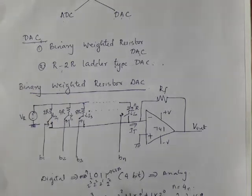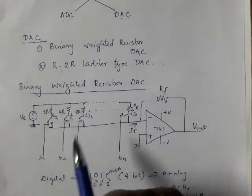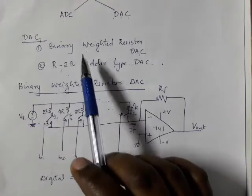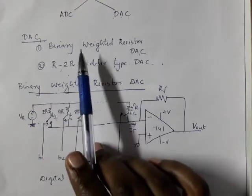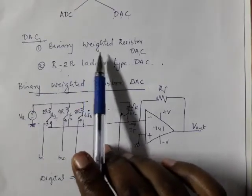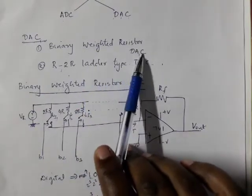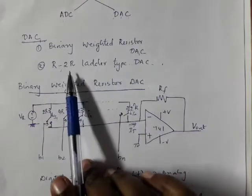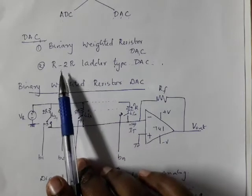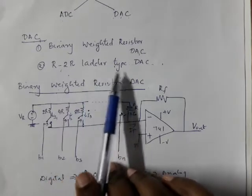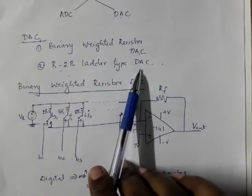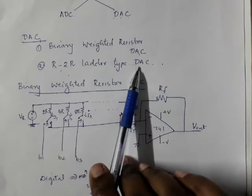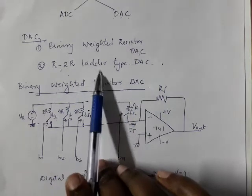In Part 1 we discussed about binary weighted resistor DAC. In Part 2 we are going to discuss about R2R ladder type DAC, which is the second technique of DAC processing.